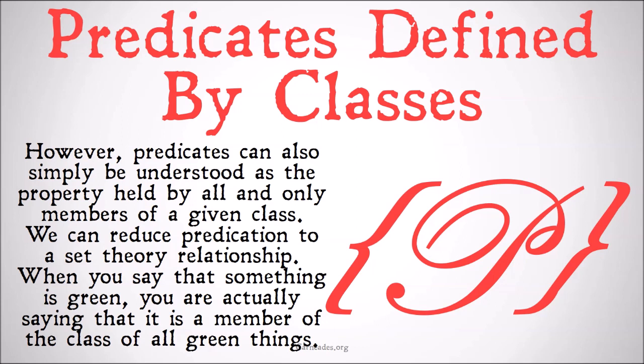However, predicates can also simply be understood as the property held by all and only members of a given class. We can reduce predication to a set theory relationship in doing this. When you say that something is green, you're actually just saying that it's a member of the class of all green things. This gets into interesting questions of whether all classes really define something that's actually a predicate. If I have the class of the tallest tree, the planet Jupiter, and my left toe, is there really a predicate that describes those? You might call that a disjunctive kind, but we can set those aside for later. For now, understand that we can at least define some predicates in terms of simply being a class of things.